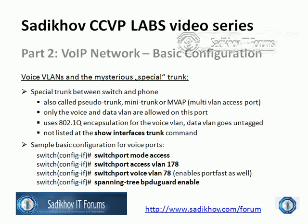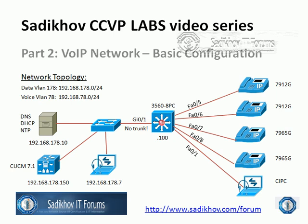Before moving on to the command line, let's have a quick look at the lab topology. I'm using Class C networks where the third octet corresponds to the VLAN ID — the data VLAN 178 uses the 192.168.178.0 network, and the voice VLAN with ID 78 uses the 192.168.78.0 network.